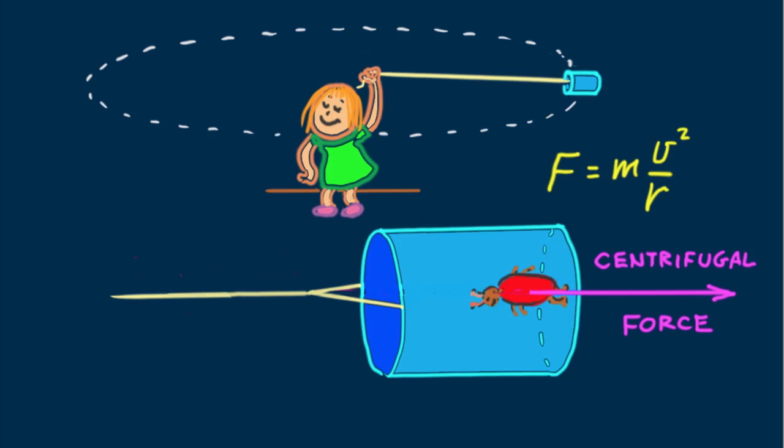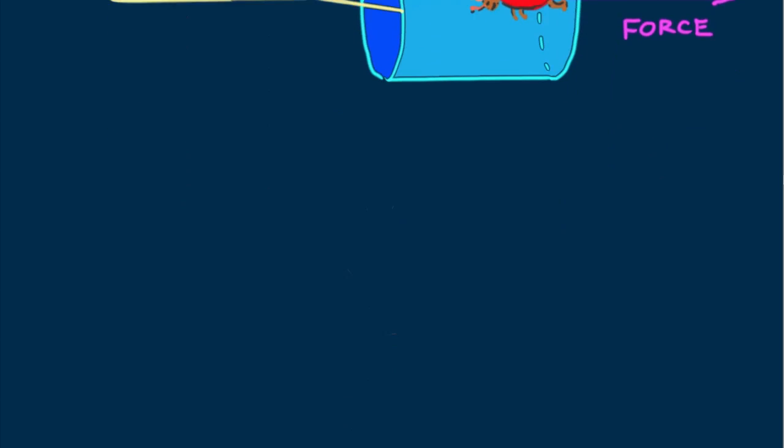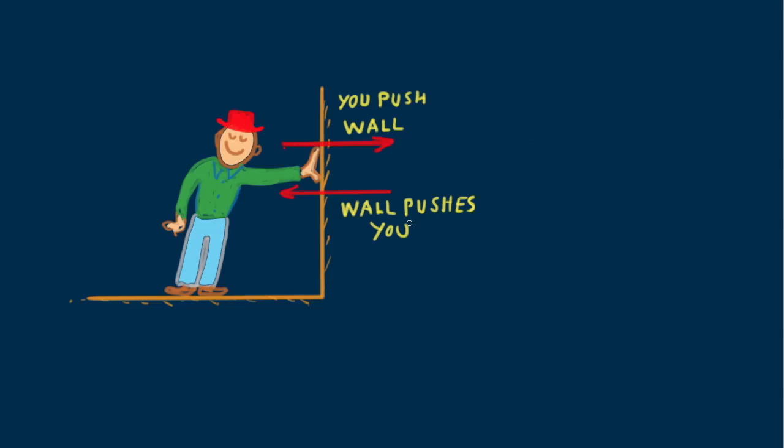To better understand this important point, let's return to examples of previous lessons. When you push on a wall, the wall pushes back on you. This pair of equal and opposite forces illustrates Newton's third law. Remember that you can't push on the wall unless the wall pushes back equally hard on you.